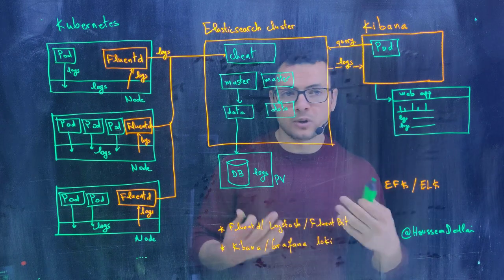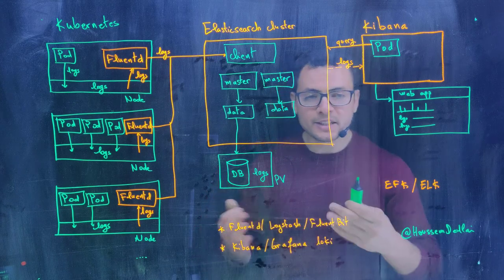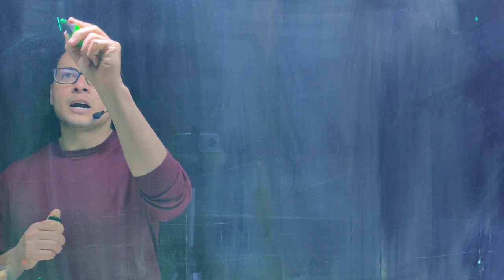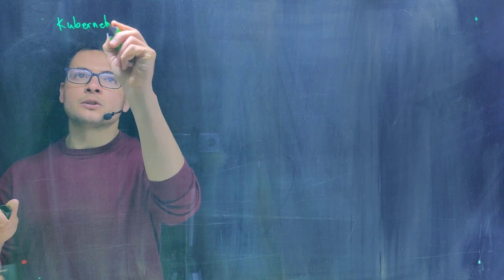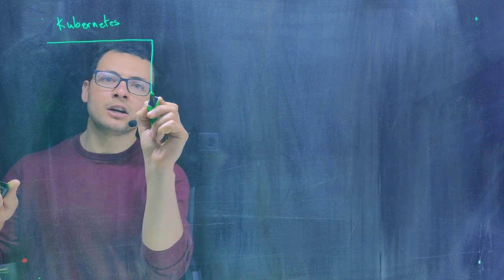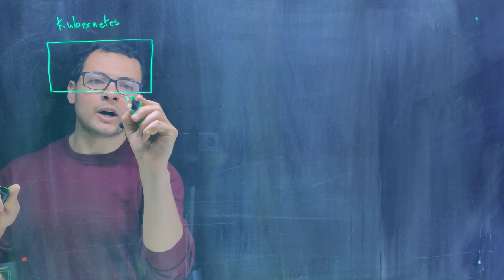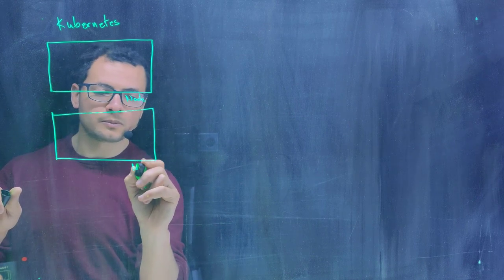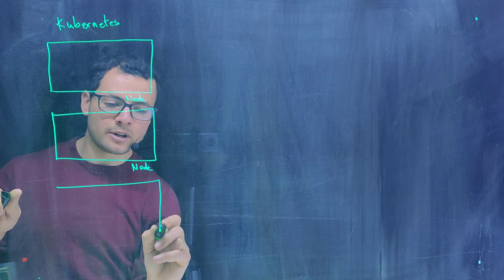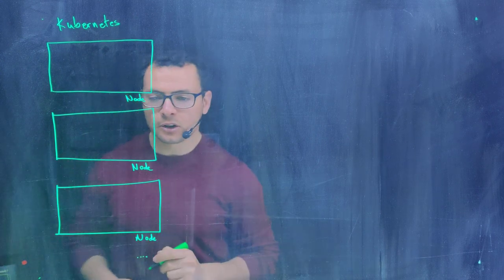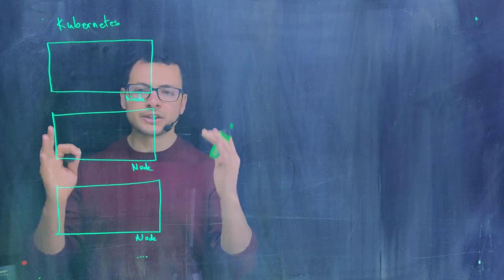So let's get started and learn how the EFK suite works in Kubernetes. In a typical Kubernetes cluster we would have multiple nodes. Let's say we have node number one, node number two, and node number three. There might be even more nodes running in the cluster — these nodes represent the Kubernetes cluster.